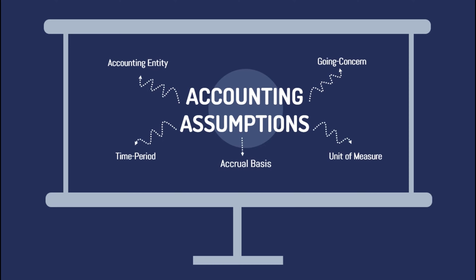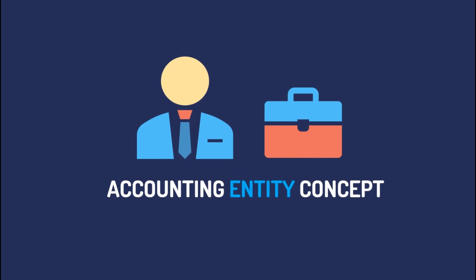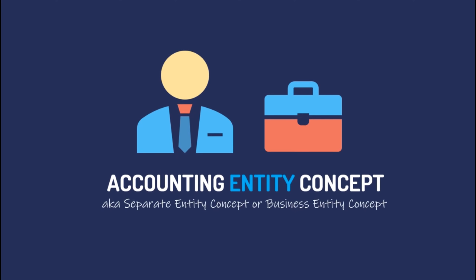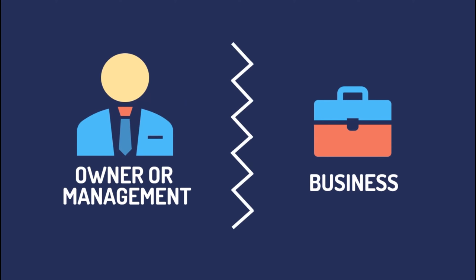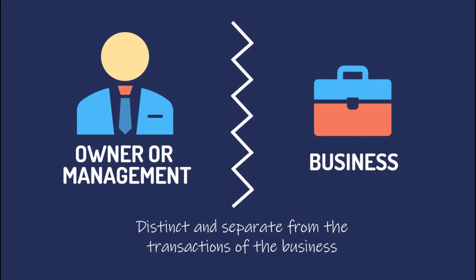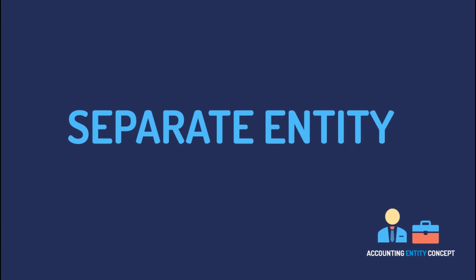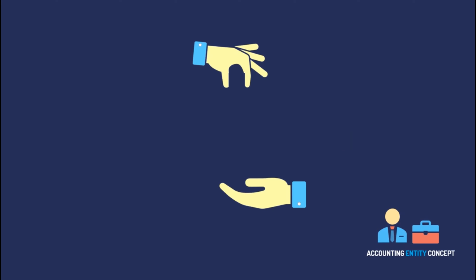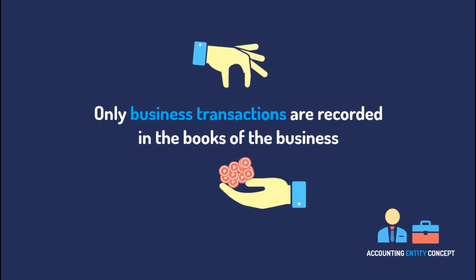Let's start with the accounting entity concept, also known as the separate entity concept or the business entity concept. The essence of accounting entity is the separation of the business from the owner or the management. It simply means that everything the owner or the management do is distinct and separate from the transactions of the business. This is the reason why it is a separate entity. Since there are a lot of transactions that the business and the management incur daily, it is important that those transactions need to be separated properly and that only business transactions are recorded in the books of business.